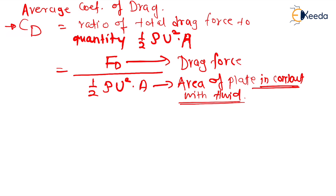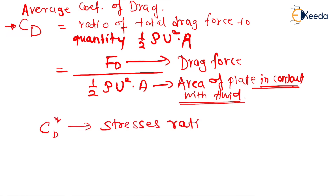So there are two key differences: Cd* (local coefficient of drag) is related to the stress ratio, while Cd (average coefficient of drag) is the forces ratio. That's all, thank you.